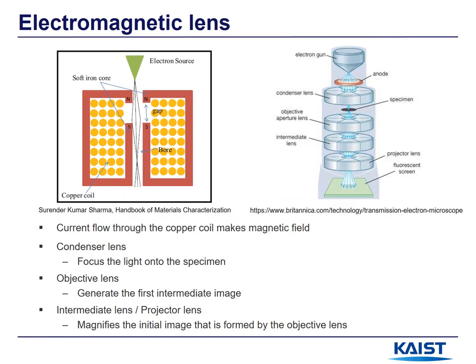The figure on the left shows the structure of the electromagnetic lens. It can be separated into two parts: an iron core and a copper coil. Current flowing through the copper coil makes the magnetic field, and the magnetic field deflects the electron beam. There are four types of lenses. The condenser lens focuses the beam onto the specimen and controls how strongly the beam is focused. The objective lens generates the first intermediate image, and this image is magnified by the intermediate lens and projector lens.